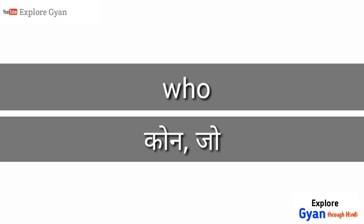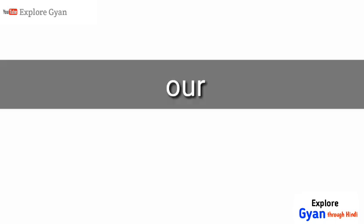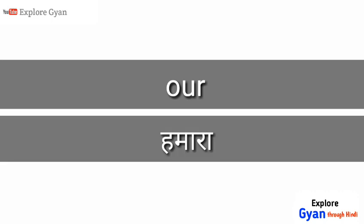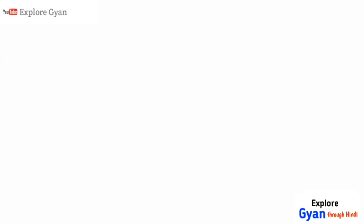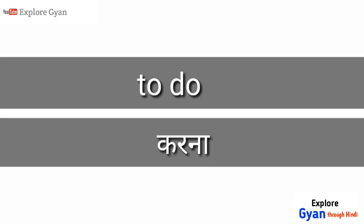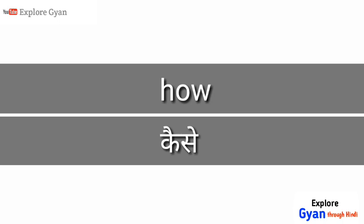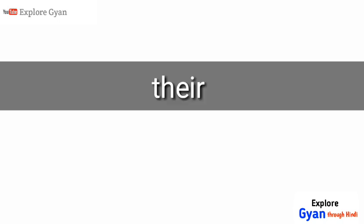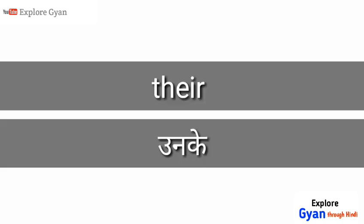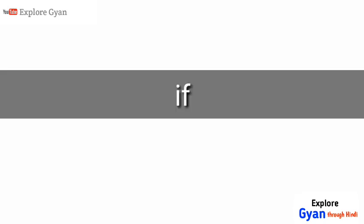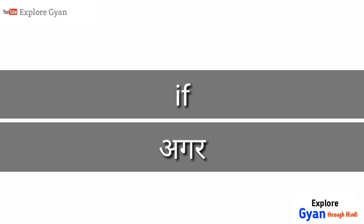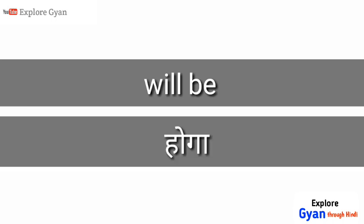'Who' - kon ya jo. 'Our' - hemara. 'To do' - karna. 'How' - kaise. 'There' - unke. 'If' - agar. 'Will be' - huga.